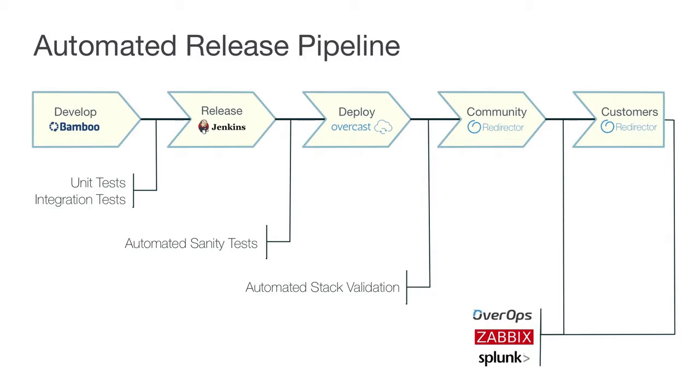OverOps fills in those gaps and rounds us out, providing what I consider a complete automated release pipeline. What's important is that each step along the way has an automated mechanism to validate that the step worked correctly. We start off with development and build steps using Bamboo, with unit and integration tests to catch any regressions. We have our homegrown deployment automation solution and automated stack validation for actual deployments. We release software to canary or community groups prior to going to all customers, and we have our production monitoring solutions — OverOps, Zabbix, and Splunk — to identify any potential regressions or problems requiring a rollback.